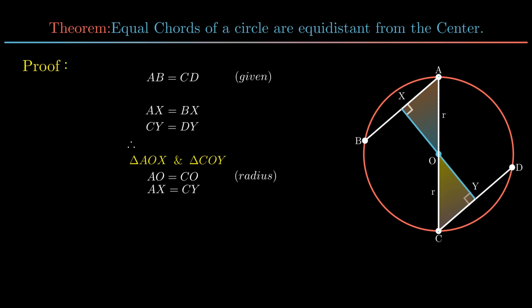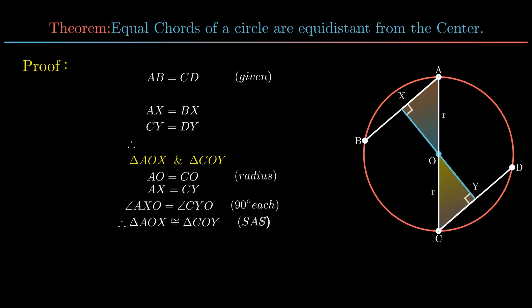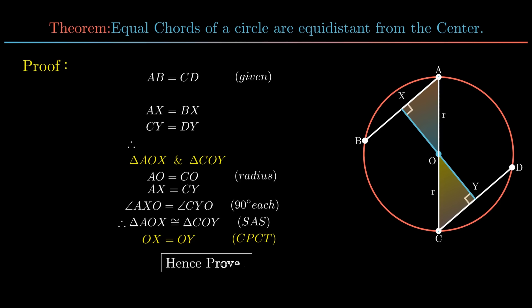Angle AXO is equal to angle CYO, each 90 degrees from construction. By SAS rule, triangle AOX is congruent to triangle COY. By CPCT we conclude OX is equal to OY. Hence the theorem is proved.